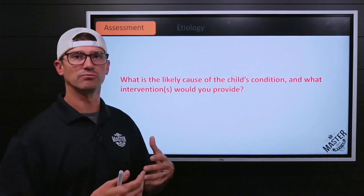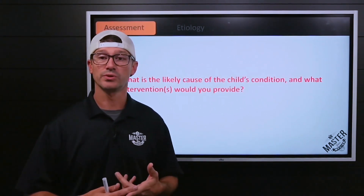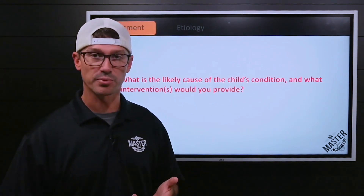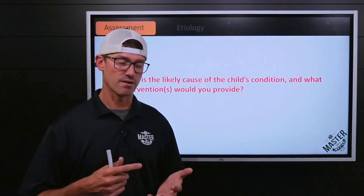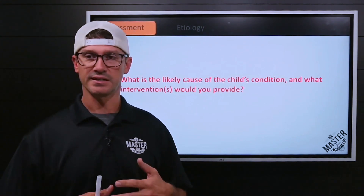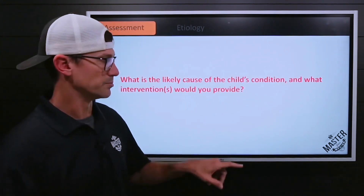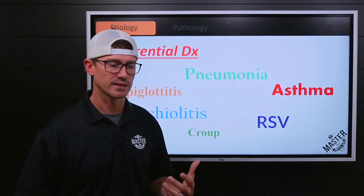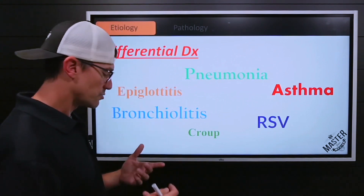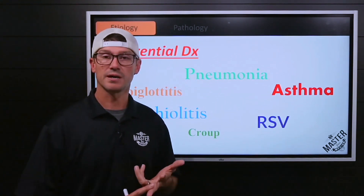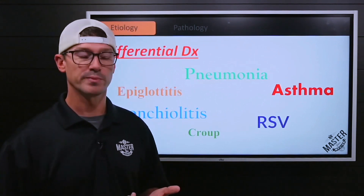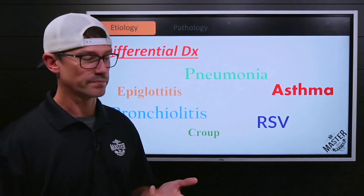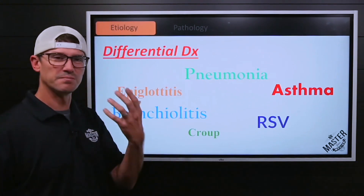Breaking that down again: a two-year-old called for difficulty breathing, with a dry non-productive cough. They are mildly febrile and just seem very uncomfortable. We'll begin with a differential diagnosis. Remember: the kid was febrile, not hypoxic — 96% on room air — with clear lung sounds and a bunch of sinus drainage.